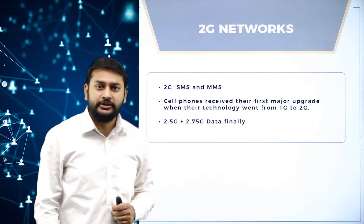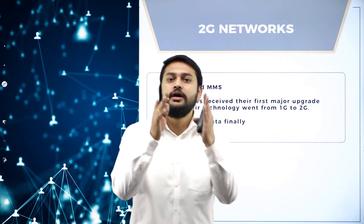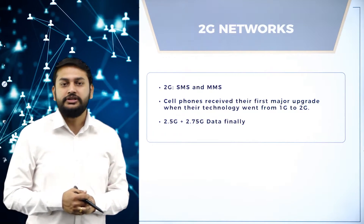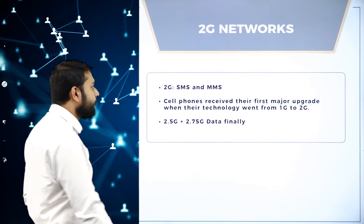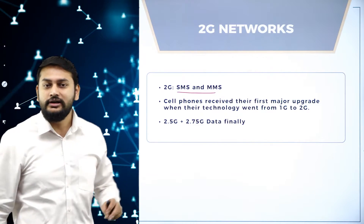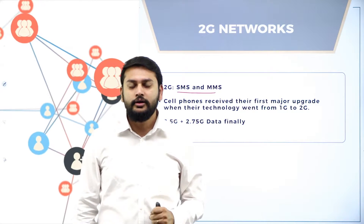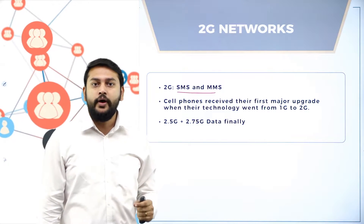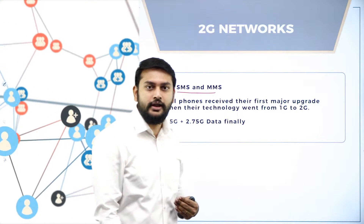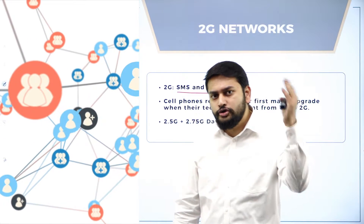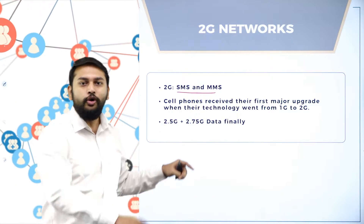In 2G, we were able to send not only voice data but also text data and multimedia messages — images, sounds. They also call this generation a major comeback because it addressed most of the problems like battery draining, frequent call drops, and the shift from analog to digital. All these things were resolved in this generation.